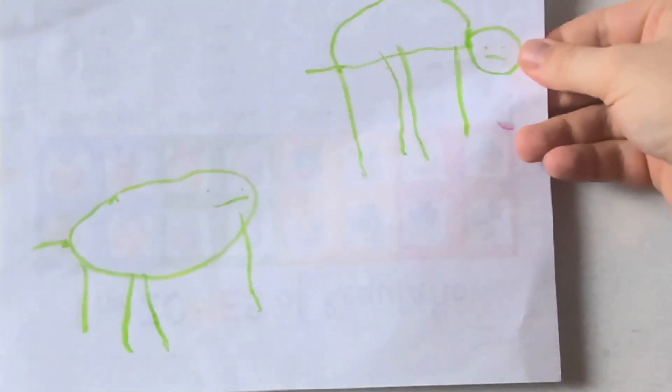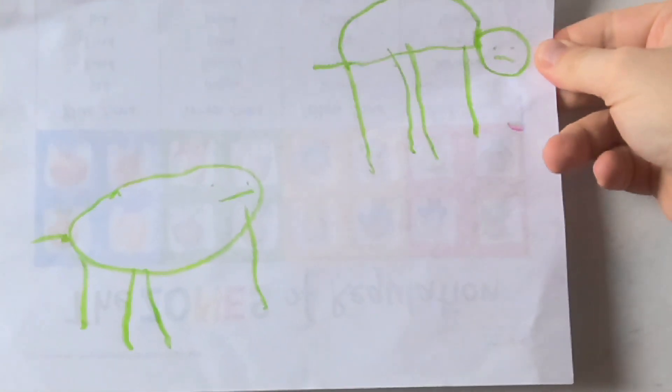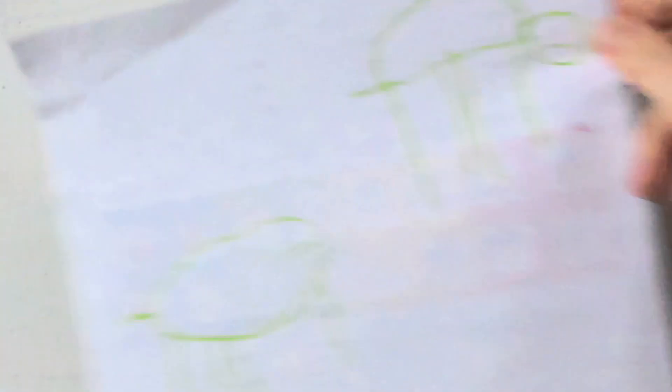What was next? Lystrosaurus, Dimetrodon, and early reptiles on Earth. Lystrosaurus, Dimetrodon, and early reptiles on Earth?